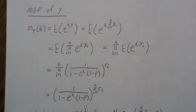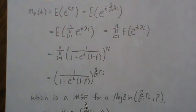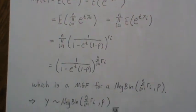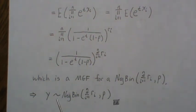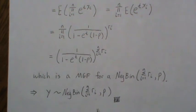But this right here is the general form of a moment generating function for a negative binomial with this parameter and P. And so that implies that Y is a negative binomial with the sum of the RIs as a parameter times P.